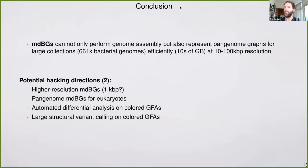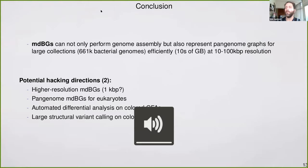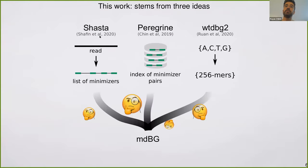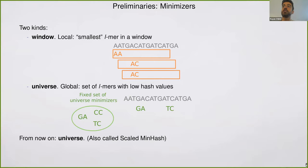Thank you, Ryan, for the lovely talk. Njagi asks: does the method assume that adjacent windows are more likely to share a minimizer? We don't use any windows in universe minimizers, but it's possible to tune Rust-MDBG to use window minimizers. In that case, adjacent windows will very likely share the same minimizer by design. Dennis also asks whether minimizers are all the same length — yes, and maybe you can elaborate on whether different lengths are possible.